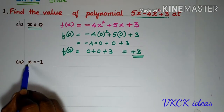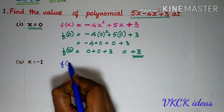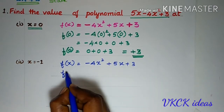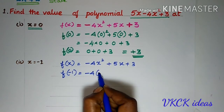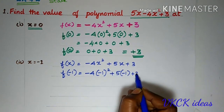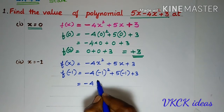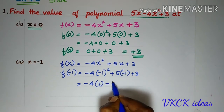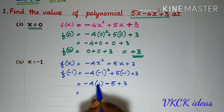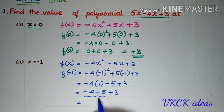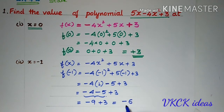Now, we shall find out the value of the polynomial when x = -1. The polynomial is -4x² + 5x + 3. Replacing x by -1: -4(-1)² + 5(-1) + 3. Be careful when you multiply — (-1) × (-1) will become +1, so it is -4(1) + (-5) + 3 = -4 - 5 + 3. Both negatives give -9, and -9 + 3 = -6. So, f(-1) = -6.